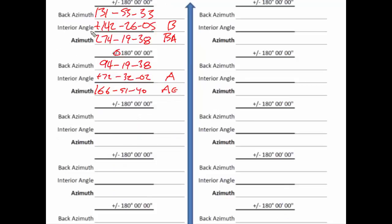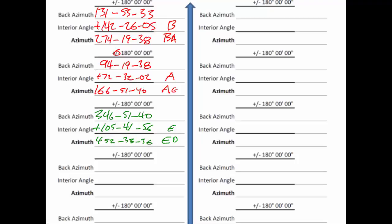Having found AE, the next angle we use is at E, and this will give us direction ED. The back azimuth of AE is 346 51 40, and when I add 105 41 56, which is the interior angle at E, the result will be greater than 360 — it comes out to be 452 33 36. To fix that, I subtract 360 from 452 and get 92 33 36. We've now calculated the four unknown sides.